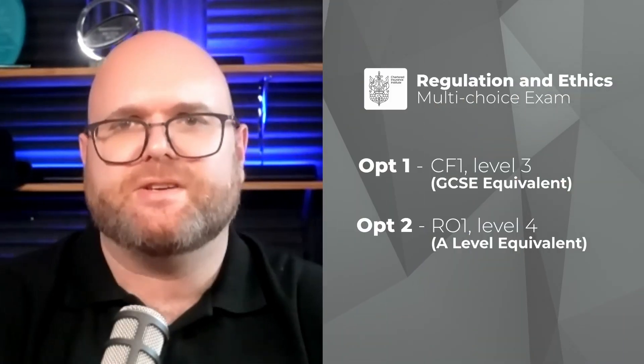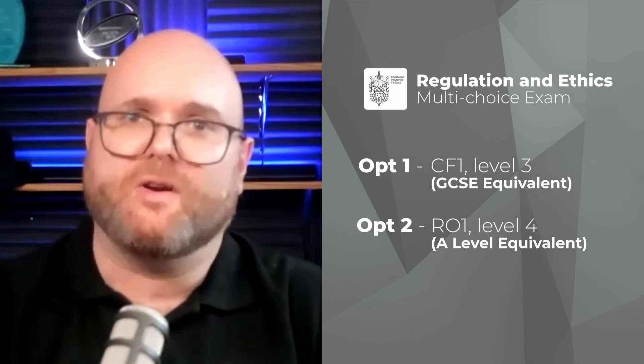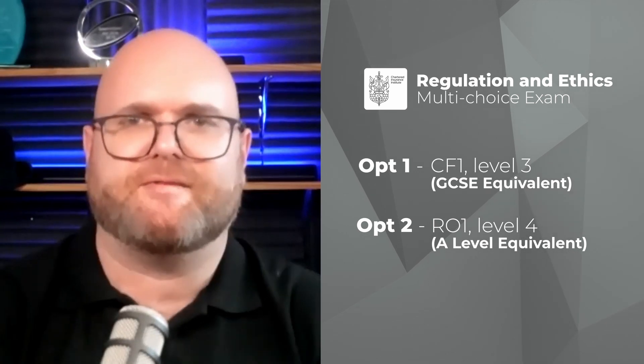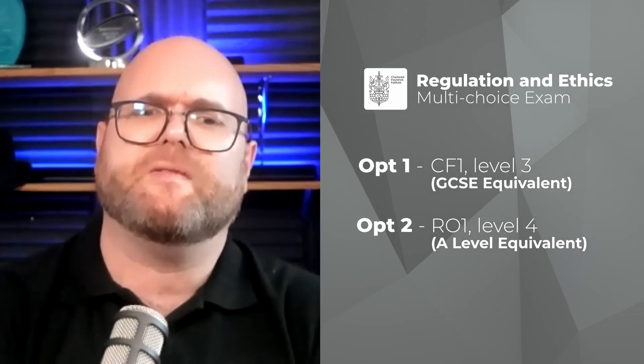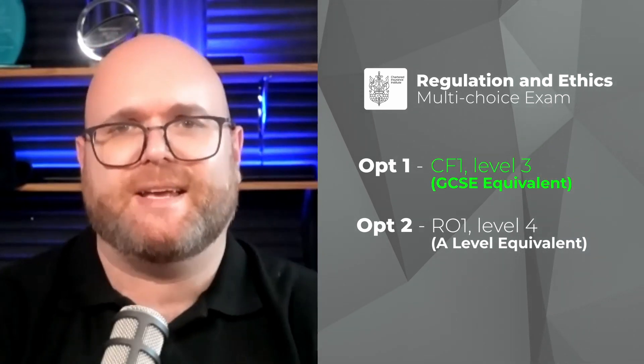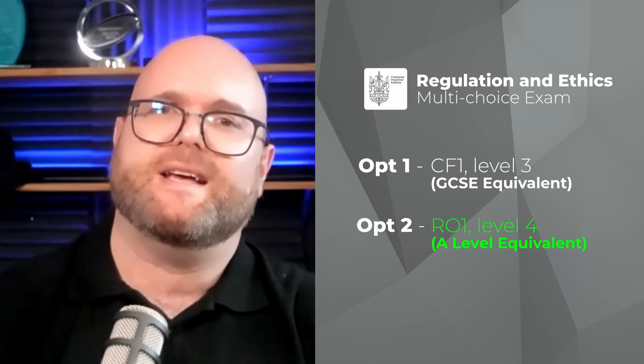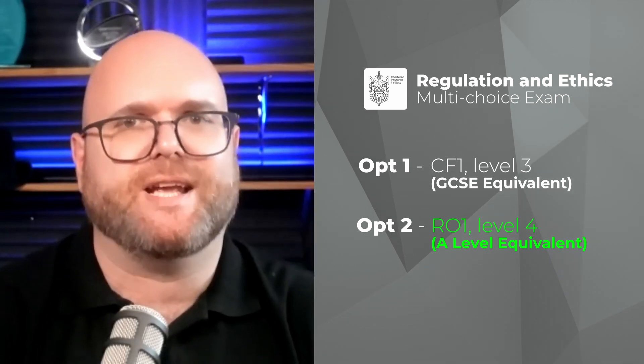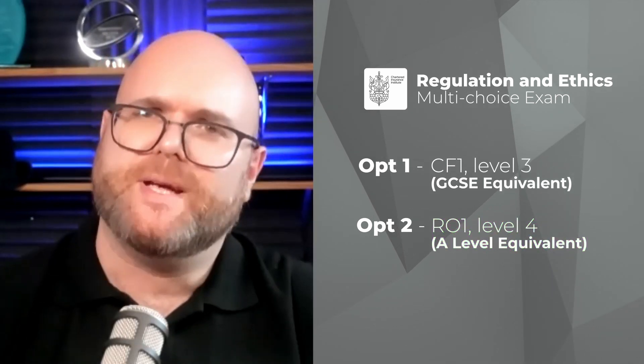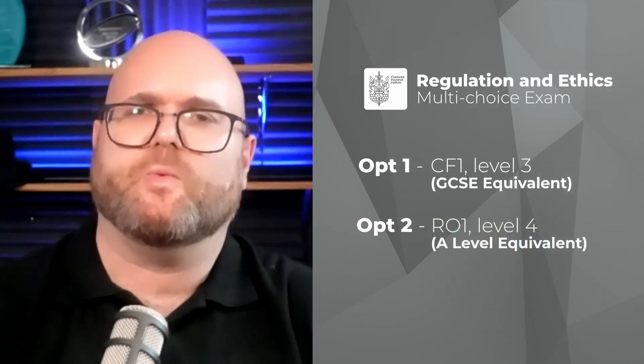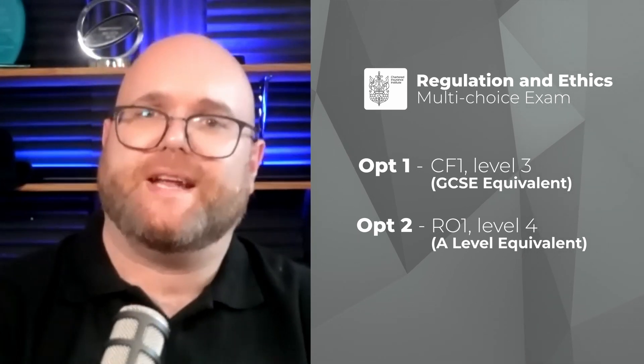Now, I mentioned CF1 and RO1 as two options on that route — it's an either/or option, both of them are Regulation and Ethics papers. CF1 is a multiple choice paper positioned at a GCSE level — it's a level three. RO1 is also a multiple choice paper but it's positioned at level four. The big differentiator and why you might choose one over the other is what they can then lead to.